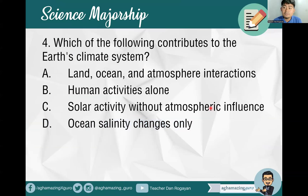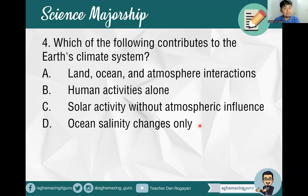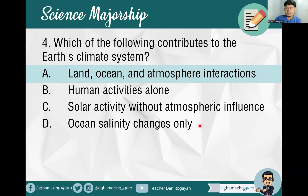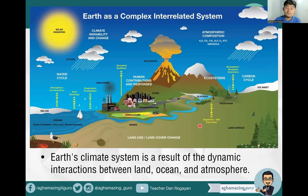Number four: Which of the following contributes to the Earth's climate system? A, land, ocean, and atmosphere interactions. B, human activities alone. C, solar activity without atmospheric influence. Or D, ocean salinity changes only. The answer is letter A — land, ocean, and atmosphere interactions. Earth's climate system is a result of the dynamic interaction between land use or land cover change, the ocean, and the atmosphere. Earth has a complex, interrelated system.